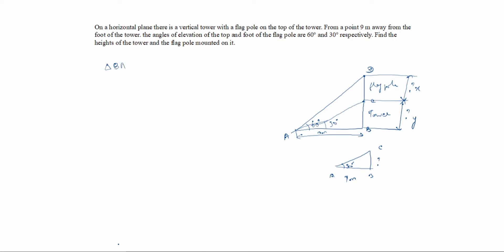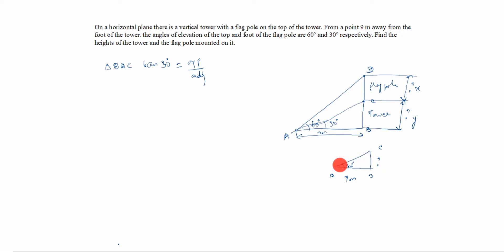For triangle BAC, tan 30° equals opposite by adjacent. The opposite side is BC (which we call y) and the adjacent side is 9 meters. We choose tan because we need to calculate the opposite side — the hypotenuse is the biggest side, and we do not know the opposite, so we take BC or y.